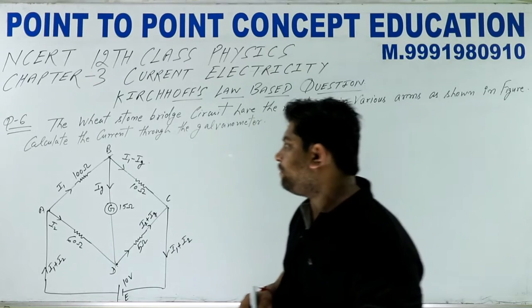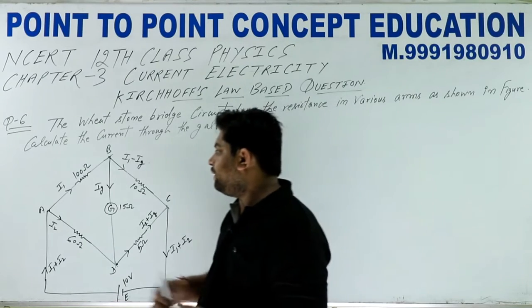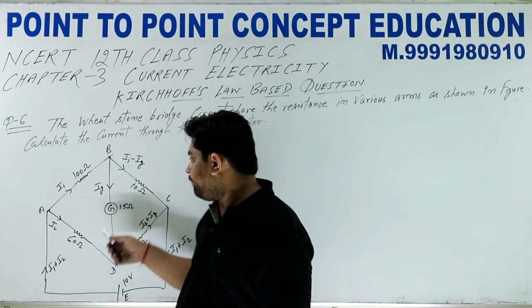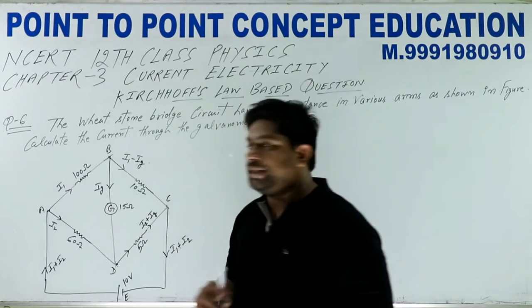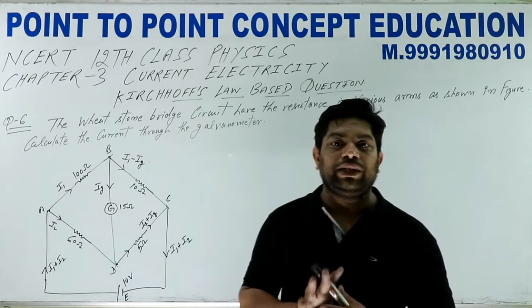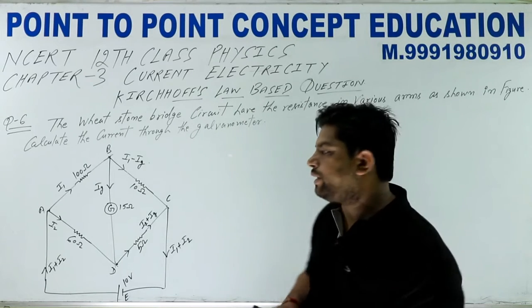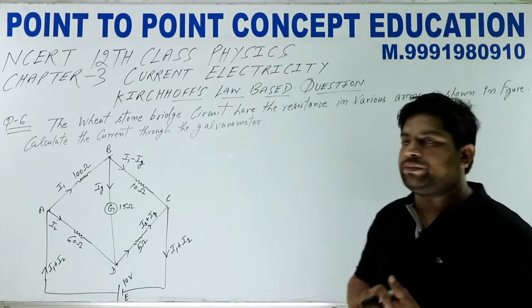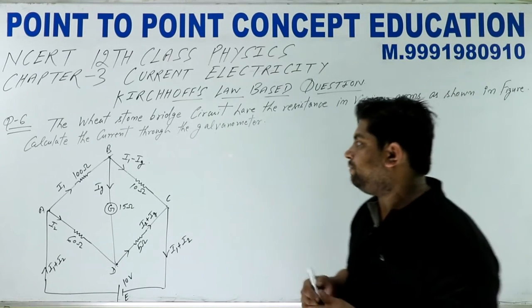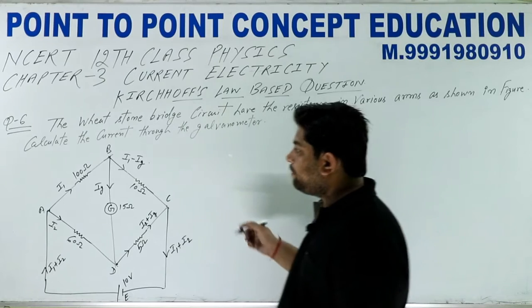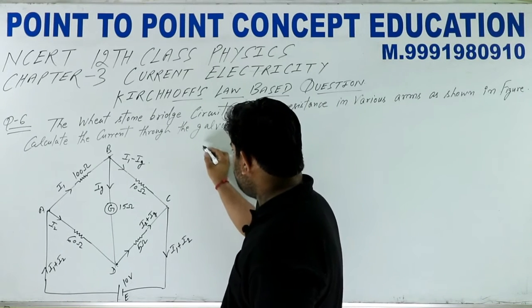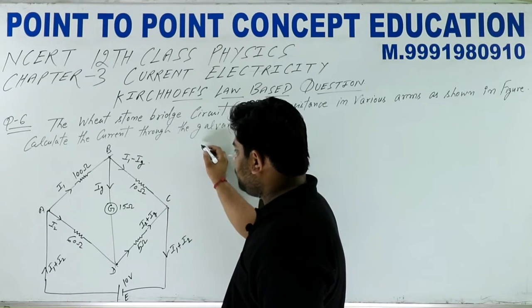पहला point, यहाँ पे देखें करेंट कितने हैं — I1, I2, IG — तीन करेंट हैं। तीन करेंट होते हैं तो हमें equation कितने बनाने होते हैं — तीन। तो सबसे पहले हम ले रहे हैं close circuit।